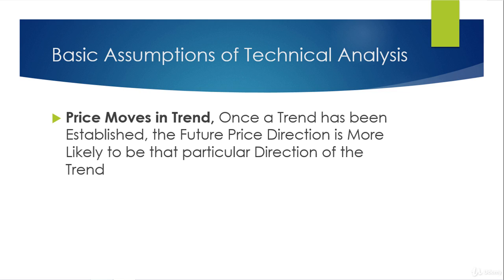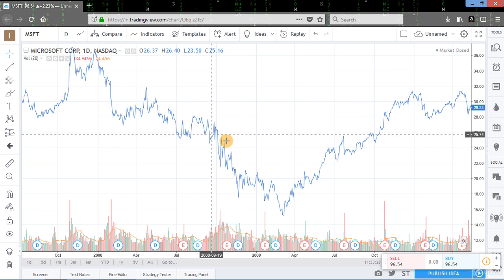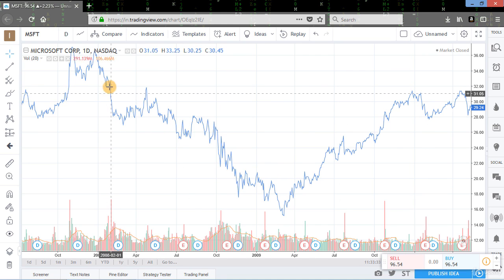The second assumption of technical analysis is that price moves in trends. Trading with the trend is the key to getting success in technical analysis. Once a trend has been established, the future price direction is more likely to be in that particular direction. It is always possible to identify a trend, invest based on the trend, and make money. For example, if the current trend is up, we can buy at the bottoms and sell at the highs and make profit in the fall also.